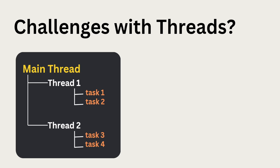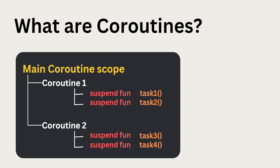Using threads can help us make our applications efficient and more responsive, but it comes with a lot of challenges. Mainly because each thread needs memory and CPU time to run. Additionally, synchronization issues are very important to consider when using threads. That's why we use coroutines instead of threads.